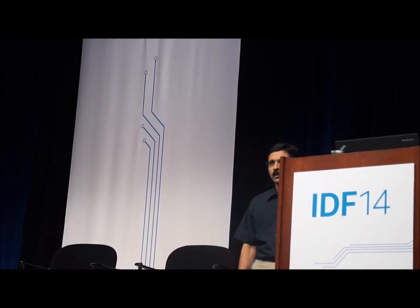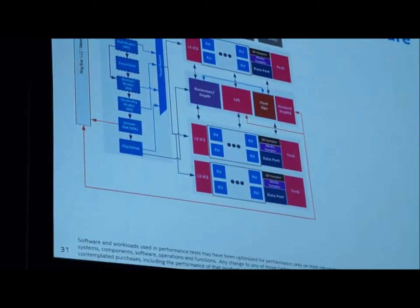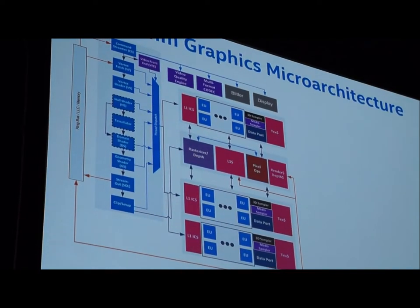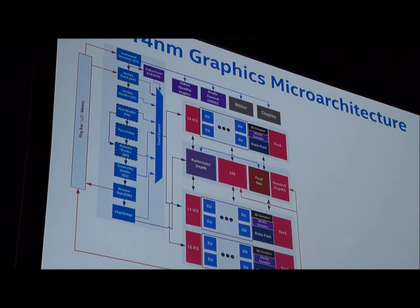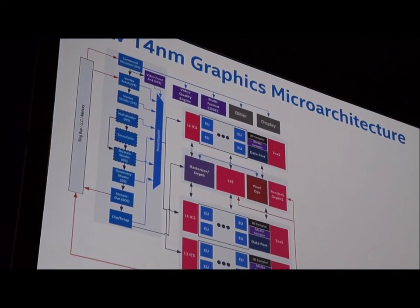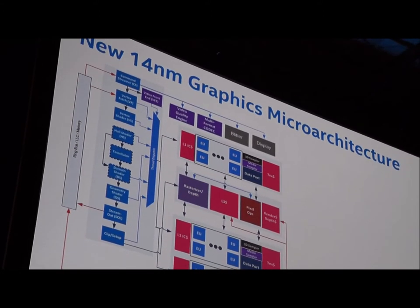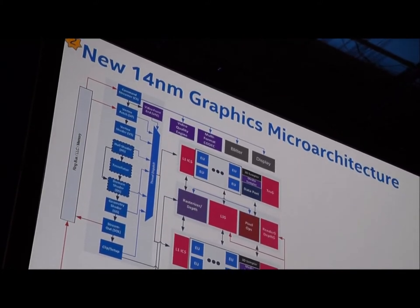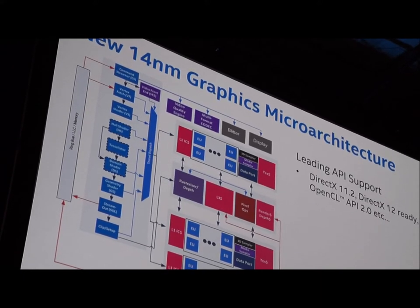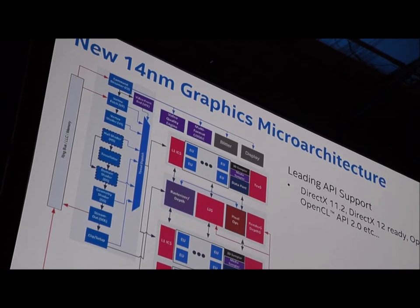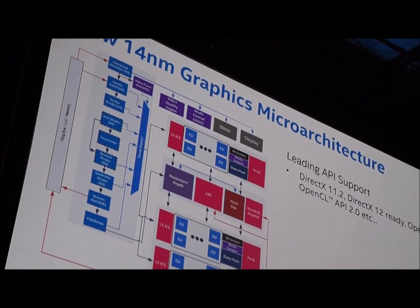The new graphics microarchitecture maintains fixed-function blocks on the left — vertex, tessellation, clipping, and setup pipelines supporting the traditional DX11.x fixed-function pipeline — with the center of the block diagram showing subslices and a slice common block in between. The architecture supports all latest APIs: DirectX 11.2, DirectX 12 ready, OpenGL 4.3, and OpenCL 2.0. Performance of all key fixed-function building blocks — vertex shader, geometry shader, domain shader, and tessellation fixed function — has been increased by 2x, both to support the scaled-up slices and to handle richer geometry in newer workloads.